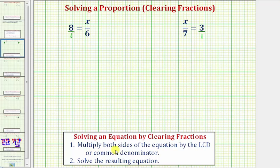step one, we multiply both sides of the equation by the LCD or least common denominator, or any common denominator, and then solve the resulting equation.